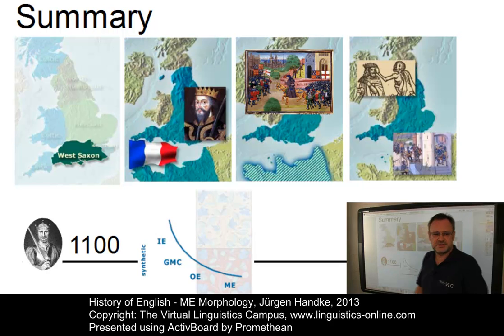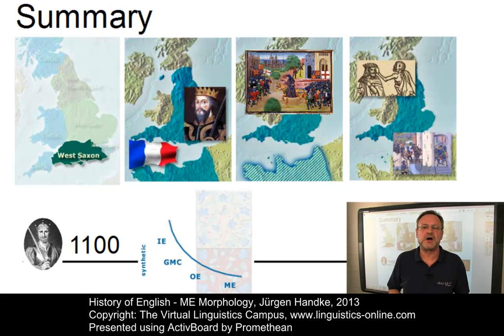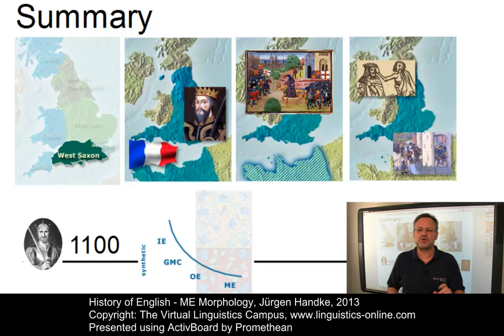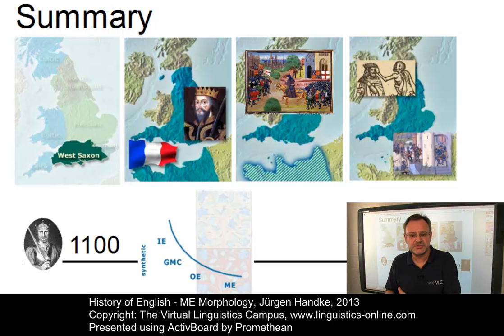Let's summarize. Middle English had become far more analytic than Old English. In many ways, the inflectional system was similar to that of present-day English. Only a few categories were more complex morphologically: verbs, which had maintained the person distinction, and nouns, which still used more plural forms than present-day English. As the inflectional system decayed, other devices were increasingly used to replace it — word order became more important to mark the main functional elements of clause structure. See you again in the e-lecture on Early Modern English Morphology or in any other e-lecture in our channel. Until then, have a nice time.